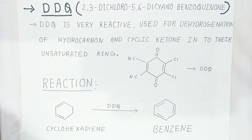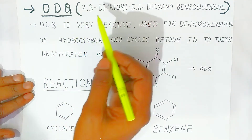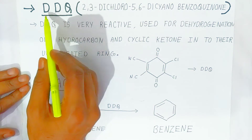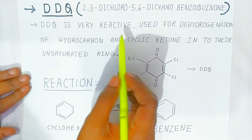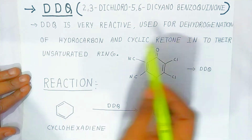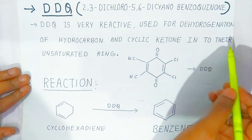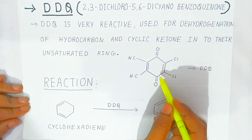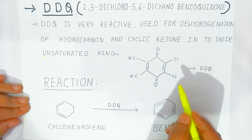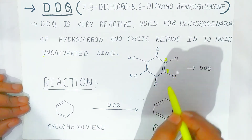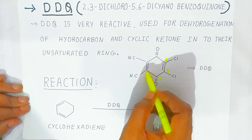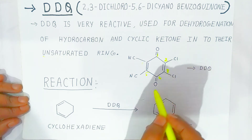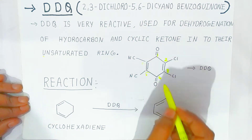Now we are going to see the next type of oxidizing agent, that is DDQ. It is called 2,3-dichloro-5,6-dicyano-benzoquinone — in short, we call it DDQ. DDQ is very reactive and is used for dehydrogenation of hydrocarbons and cyclic ketones to their unsaturated rings. This is the structure of DDQ: 2,3-dichloro at positions 2 and 3, making it 2,3-dichloro-5,6-dicyano-benzoquinone.